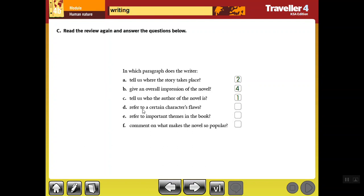In which paragraph does the writer refer to a certain character's flaws? Flaws means defects or عيوب. That's in paragraph three. In which paragraph does the writer refer to important themes in the book? موضوعات مهمة في الكتاب - he refers to that in paragraph four. The last one: In which paragraph does the writer comment on what makes the novel so popular? In paragraph four also in the conclusion. These are the answers to the first exercise.